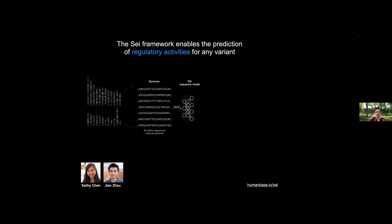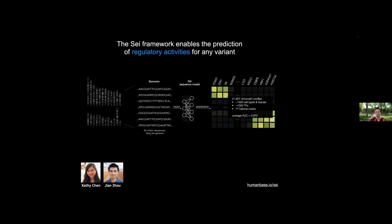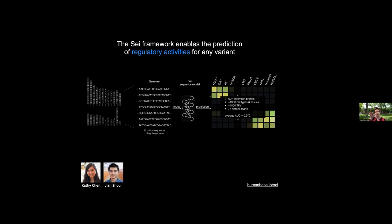After the model is trained, we go through these 30 million sequences for the genome and make predictions. That gives us a matrix where each column is a particular feature — transcription factors, chromatin marks, etc. — and the rows are these 30 million sequences. The 30 million comes from stepping through the 3 billion base pair human genome in 100 base pair steps. Each window is roughly 4,000 bases — a pretty wide sequence context.